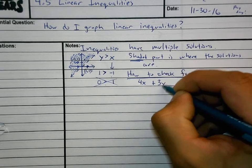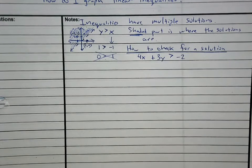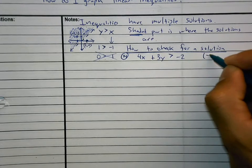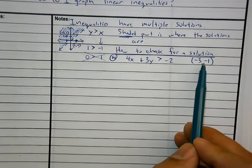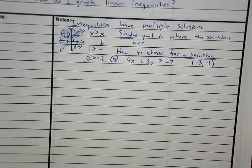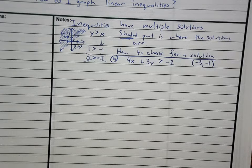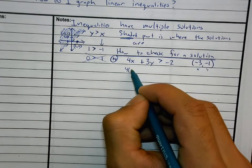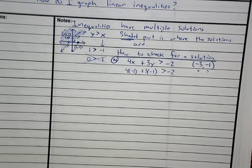Here's an example — number 14 on your worksheet: 4x plus 3y is greater than negative 2, and there's a solution which is negative 3 comma negative 1. I want to see if this ordered pair is a solution to this inequality. How do I check? I plug it in and see if it's true. You have 4 times x plus 3 times y, and you're going to see if it's greater than negative 2.